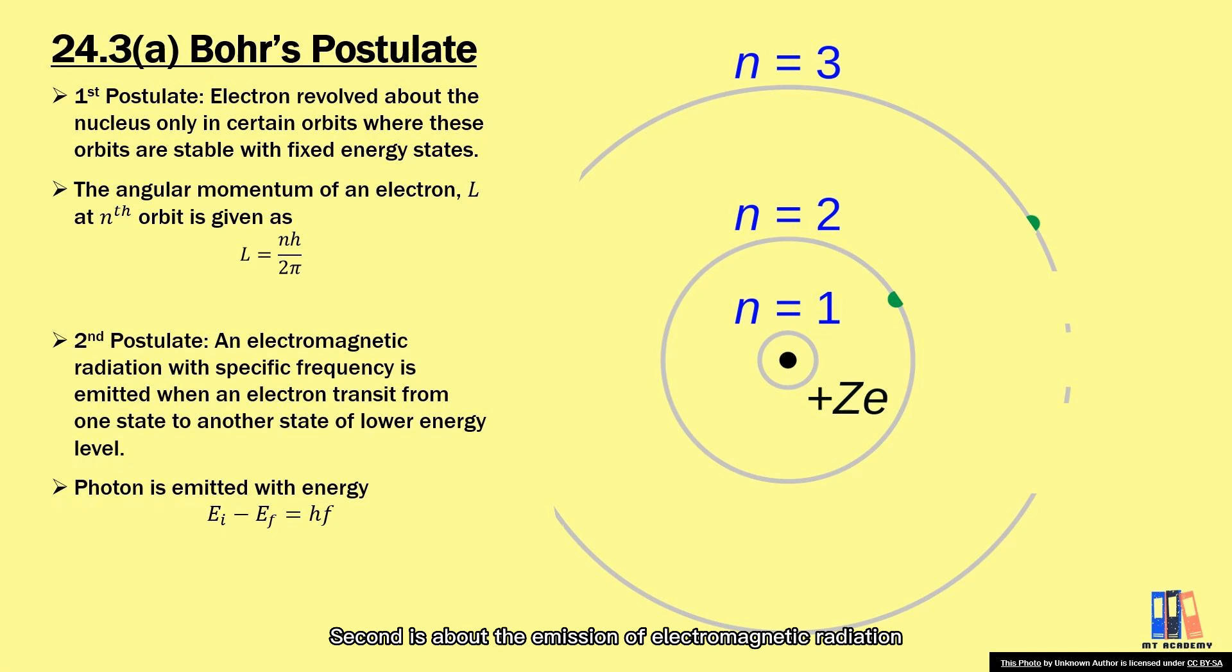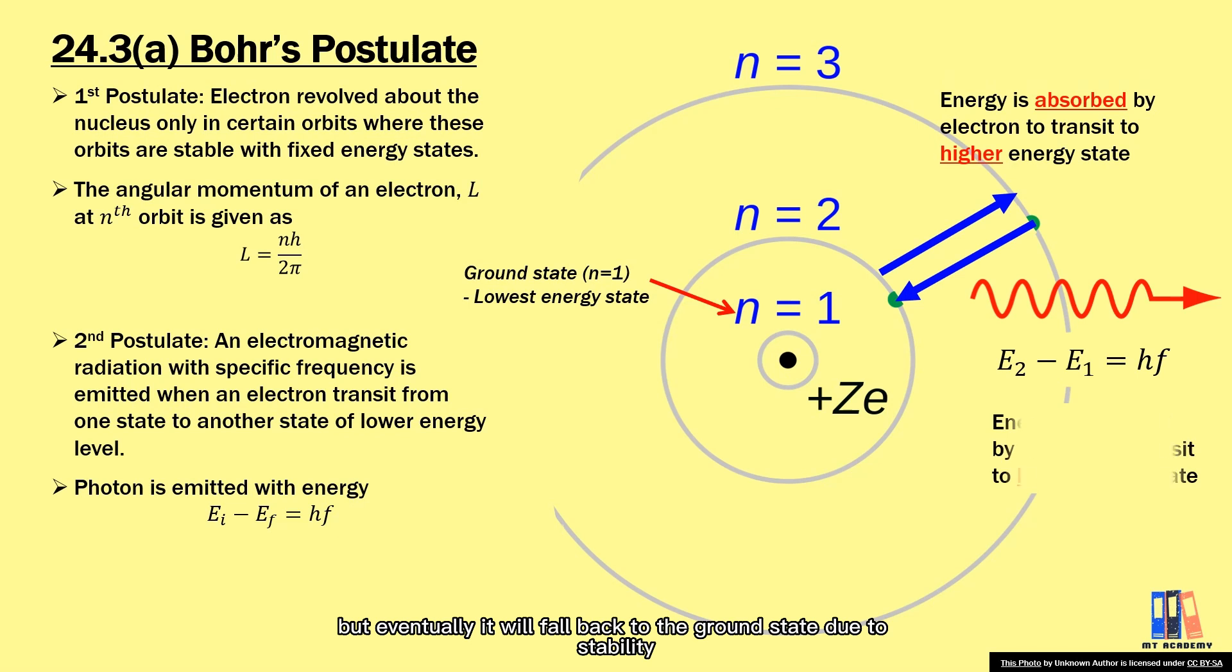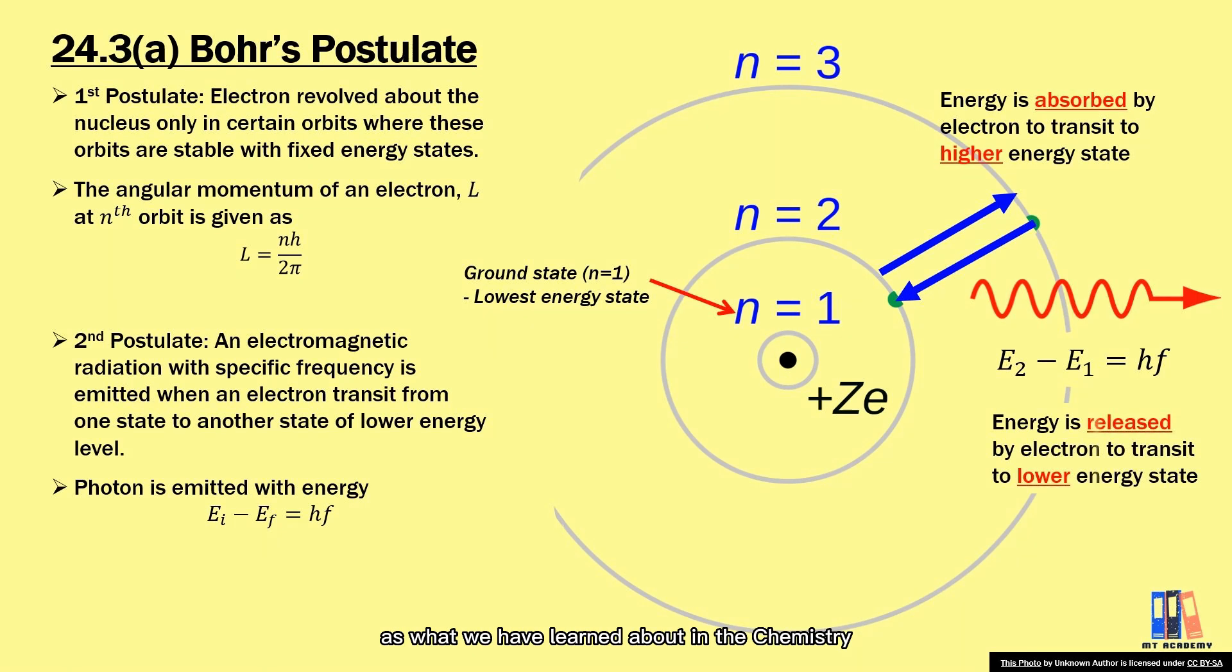Second is about the emission of electromagnetic radiation with specific frequency when there is transition of electron from higher to lower energy state. So basically we have atom with the electron in the ground state which is the lowest energy state at normal occasion. At certain condition, you can supply energy to the electron to transit to higher energy, but eventually it will fall back to the ground state due to stability.